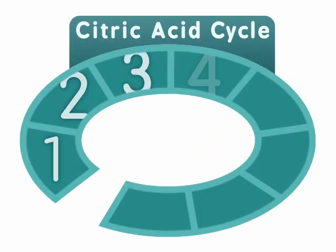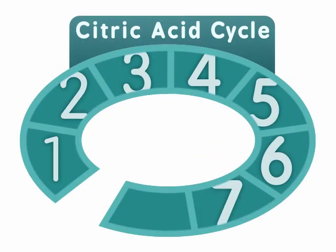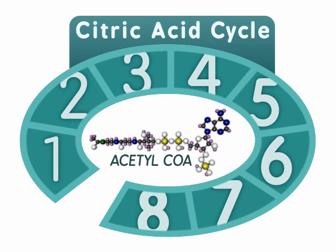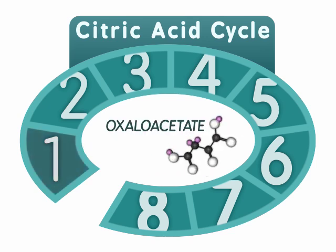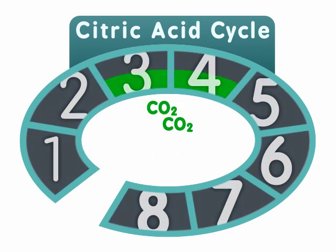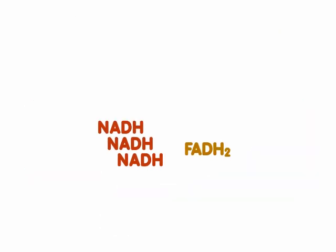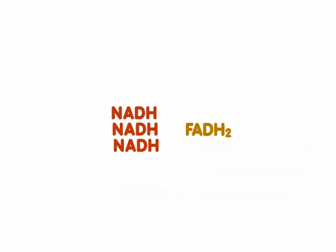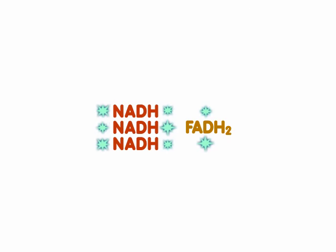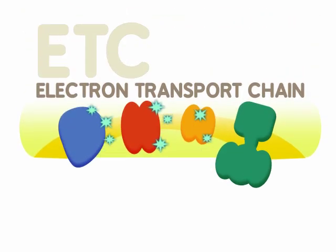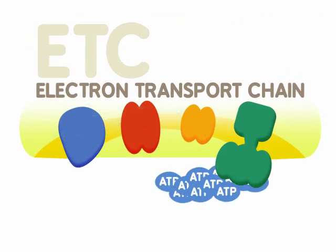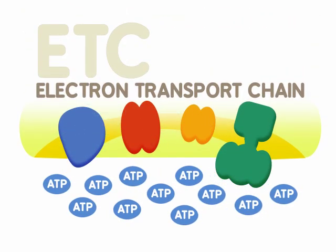The citric acid cycle involves eight chemical reactions that use acetyl-CoA and oxaloacetate to produce carbon dioxide, NADH, ATP, and FADH2. The NADH and FADH2 are electron carriers that can be used in the electron transport chain to make more ATP for a cell.